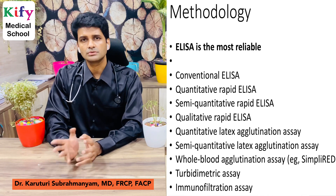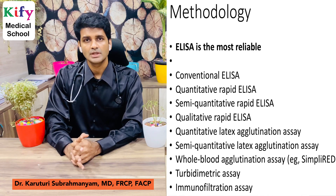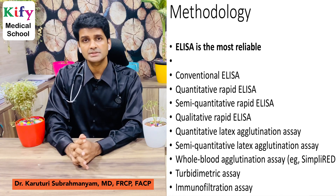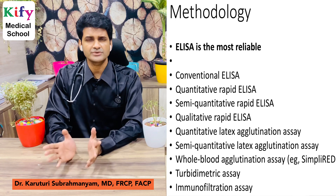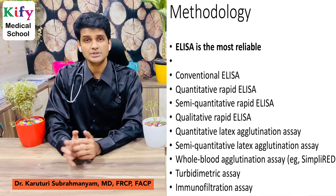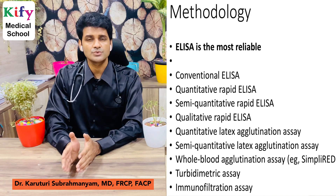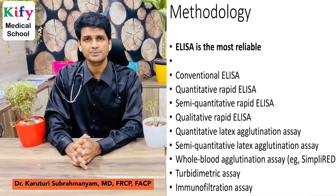Methods used to test D-Dimer include ELISA, agglutination assays, turbidimetric assays, and immunofiltration assays. Of these, ELISA is the best. Many labs use immunoturbidimetric methods, which are not as reliable. It is better to insist on labs that use ELISA for D-Dimer testing, as the other methods are not that reliable. There are also some point-of-care tests available today.